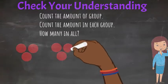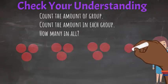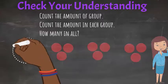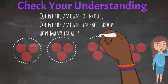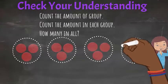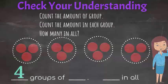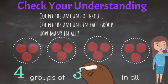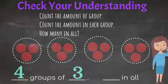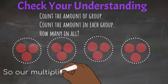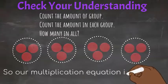Now we're making more counters and more groups. Remember, you have to count the amount of groups, count the amount in each group, and then how many in all. So how many groups are there? That's right — a total of 4 groups. How many are in each group? A total of 3 in each group. And how many are in all? Nicely done — it's a total of 12. So our multiplication equation is 3 times 4 equals 12.